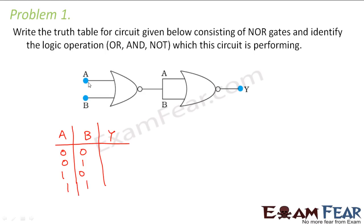Now what happens here if you see A and B it passes through a NOR gate. So what will be the output here? It will be A plus B bar. This passes through another NOR gate. So what will be the output here? A plus B. So that means the final output is Y equals A plus B. So we understood which logic operation it is performing. It is performing the OR operation.